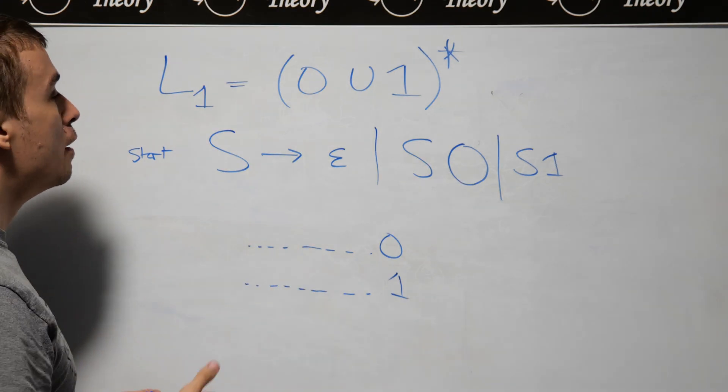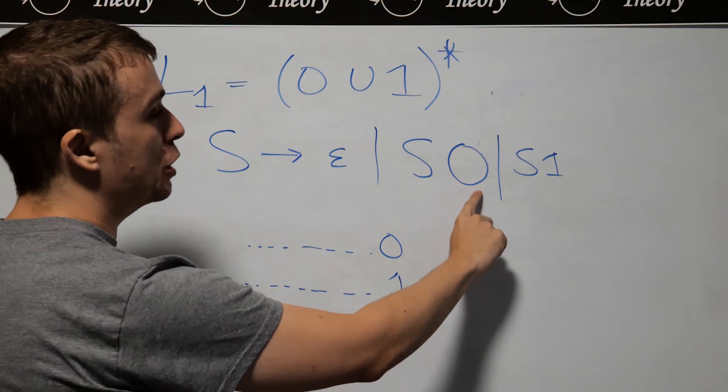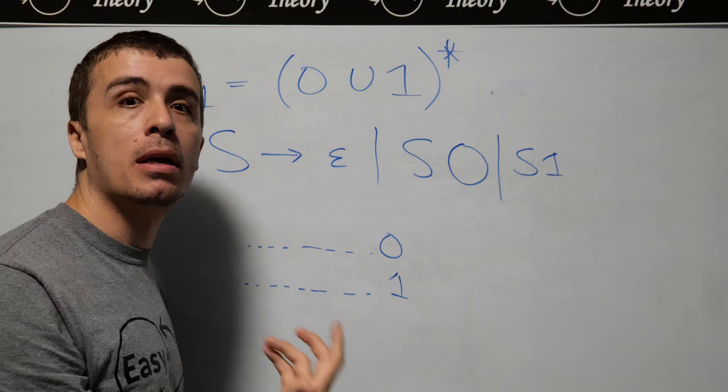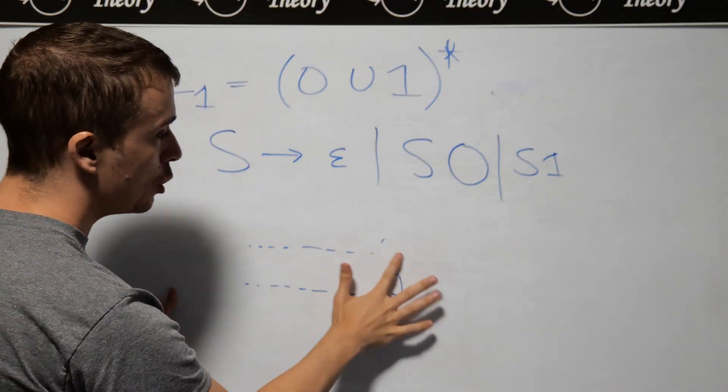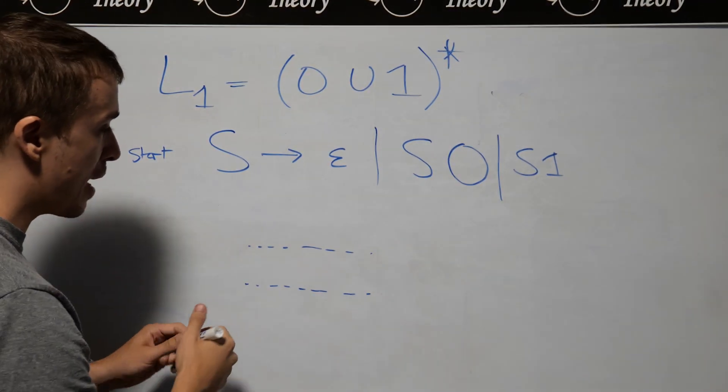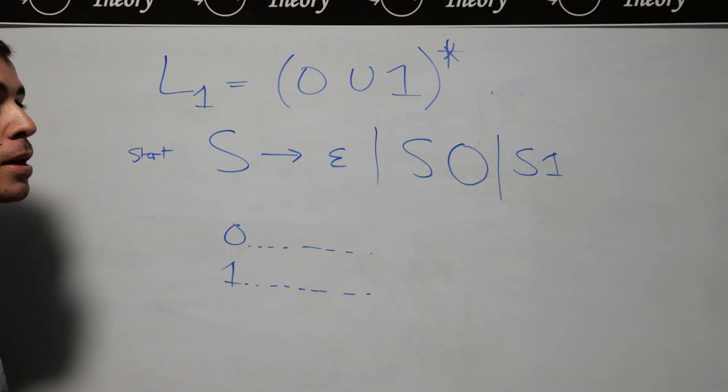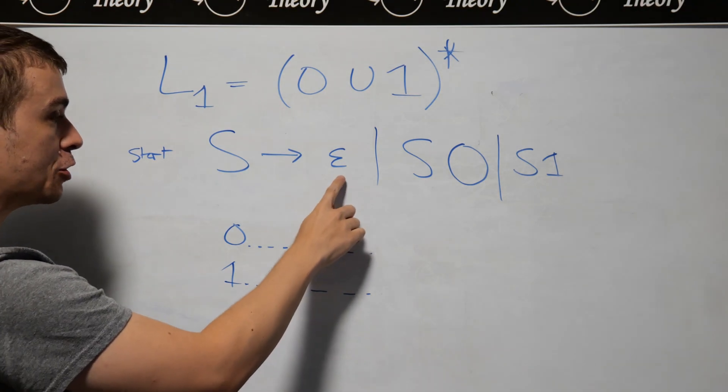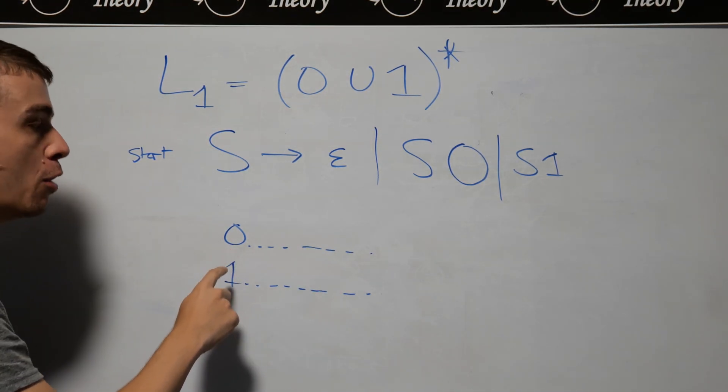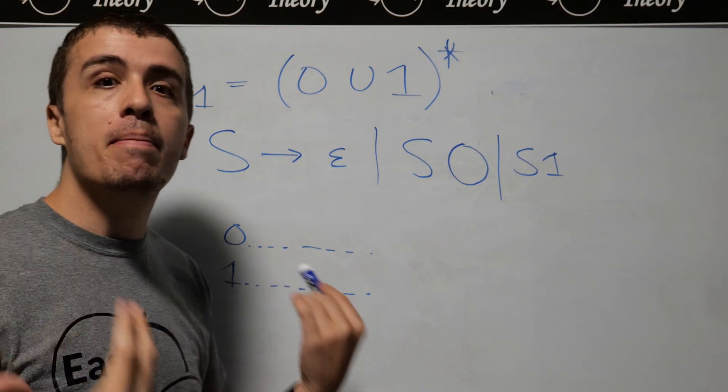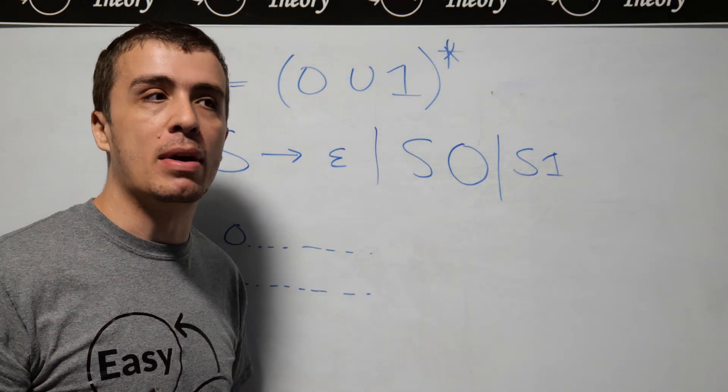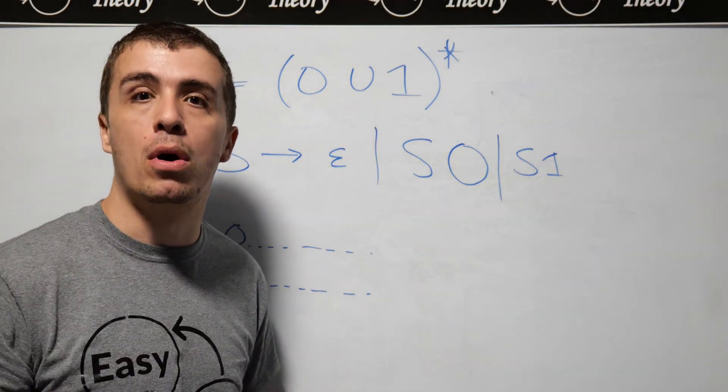We could have had some other variables right here. We didn't have to put the zero on the end, we could have put it on the front, because the same logic will apply if we have made some strings so far. We can always stick a zero or a one on the front, and every string is either the empty string, or it starts with a zero, or it starts with a one. So there are many different context-free grammars that we can make, but this is one of them, for L1.